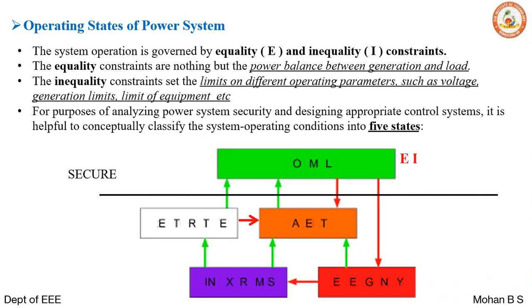The first state is called the secure or normal state, where E and I are both satisfied — governed by equality and inequality constraints where both are met. We have adequate generation as well as equal demand, so there is no overload in the system, and the system can withstand any contingencies.